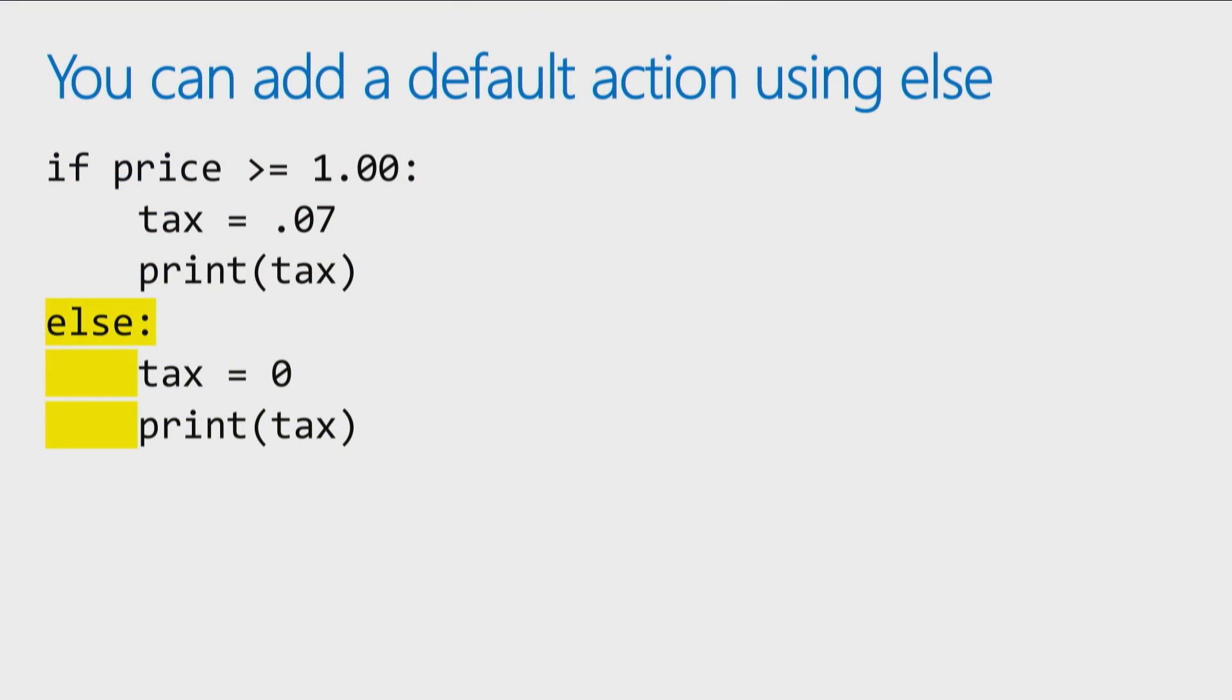We can also add a default action using an else statement. That's a way of saying if this condition is met, set the tax to 7 percent. Otherwise, do the following. So if the price is not over $1, you don't pay the tax. I can use that with an else statement. Again, always remembering that colon. I constantly forget that when I'm writing my code and have to correct the syntax error. Again, you have to indent by four spaces the lines you want executed if that happens.